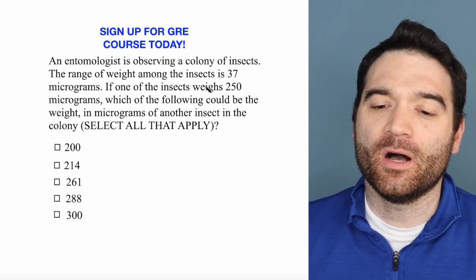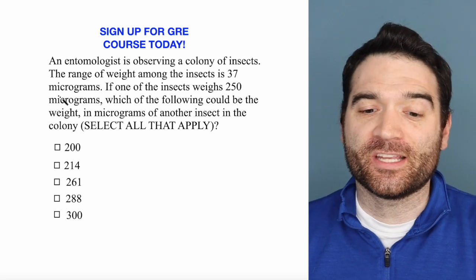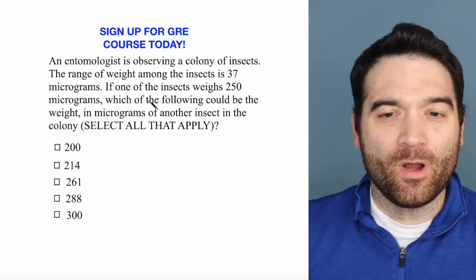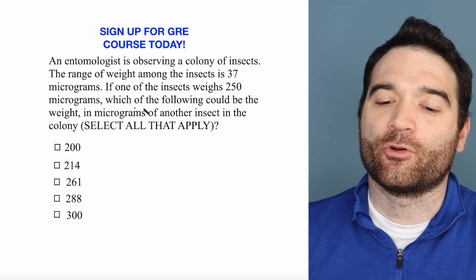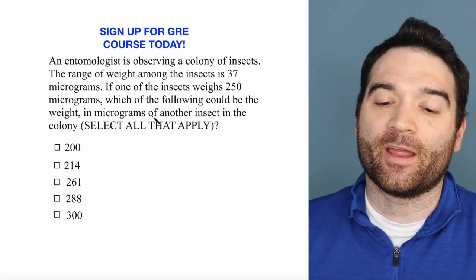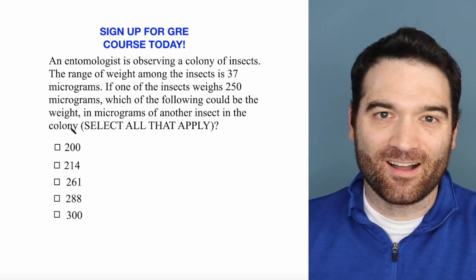The range of weight among the insects is 37 micrograms. If one insect weighs 250 micrograms, which of the following could be the weight in micrograms of another insect in the colony?